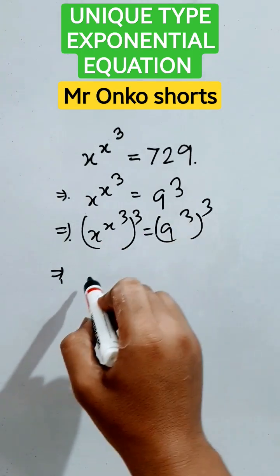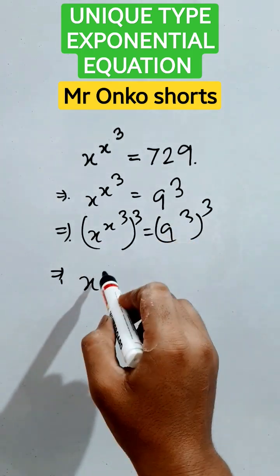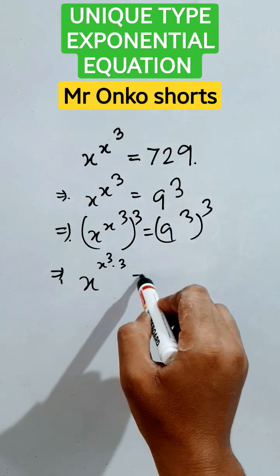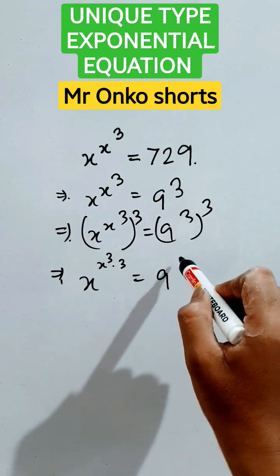Now, according to the law of indices, we can write the powers multiplied that is x to the power 3 into 3 is equals to 9 to the power 3 is a 9.